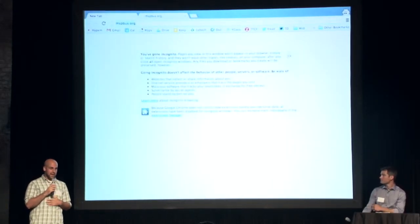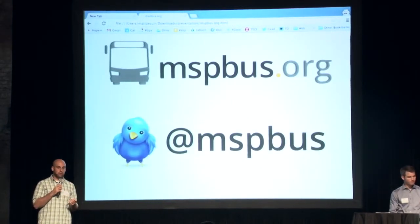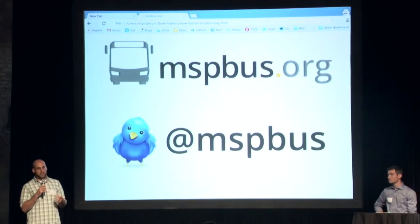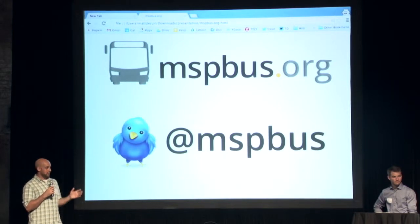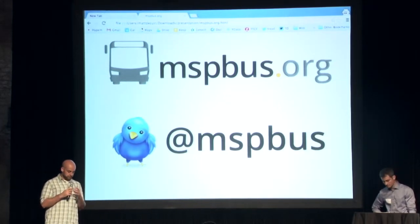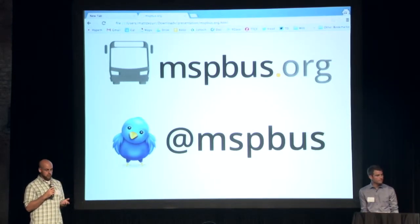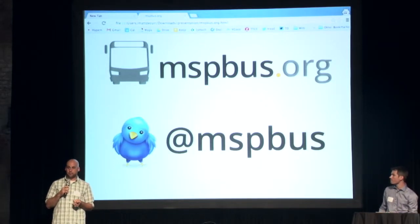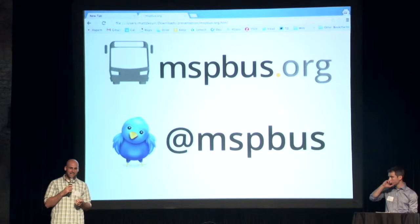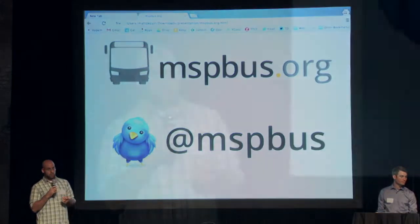My name is Matt. I'm from Seattle — I just moved here. I used to ride the bus a lot in Seattle, and they had a really, really good app for figuring out when the bus was actually going to come — if it was early or late or on time — and a ton of different interfaces for that information. When I got here, I was riding the bus and looking for that same app for Minneapolis and St. Paul, and I couldn't find it. The options available were kind of lacking: either they didn't have real-time data, or they had a bad user interface, or both.